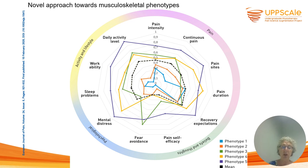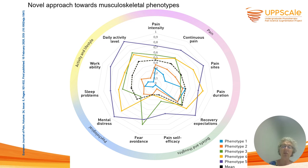In contrast, the blue group has high pain duration and high recovery expectations, but scores high on sleep problems, so maybe their sleep needs to be addressed. In the middle is the black line — the average of the five groups — which is not nearly as informative as the defined phenotypes.